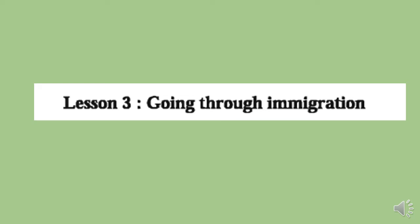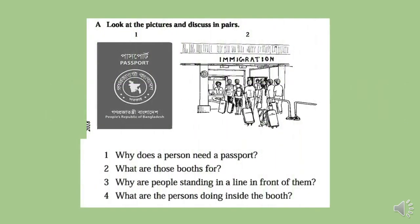Dear students, we are in Lesson 3 now, and the name of the lesson is 'Going Through Immigration.' There are two pictures on the screen. Look at the pictures carefully and try to answer the following questions: Why does a person need a passport? What are these booths for? Why are people standing in a line in front of them? What are the persons doing inside the booth? Guess the answers and then let's move to the next slide.